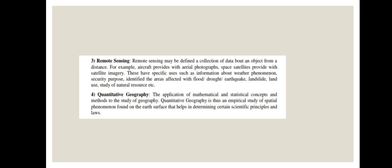The third branch is remote sensing, defined as the collection of data about an object from a distance. From a distant area we collect data — space satellites provide satellite imagery. Remote sensing has specific uses such as gathering information about weather phenomena, security purposes, and identifying areas affected by floods. If an area is affected by a flood, remote sensing allows us to trace that area and provide assistance.